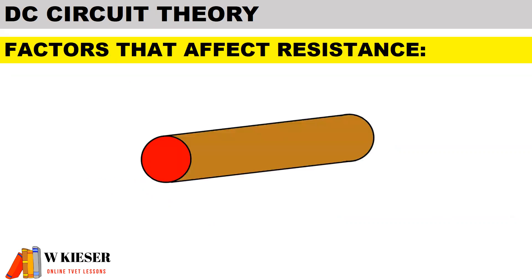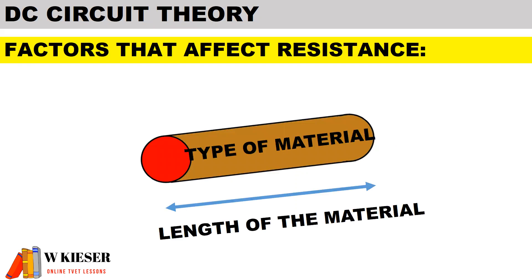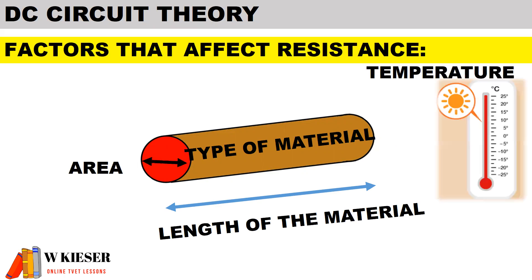What are the factors that affect resistance? The type of material, the length of the material, the area, and the temperature in which the material operates.